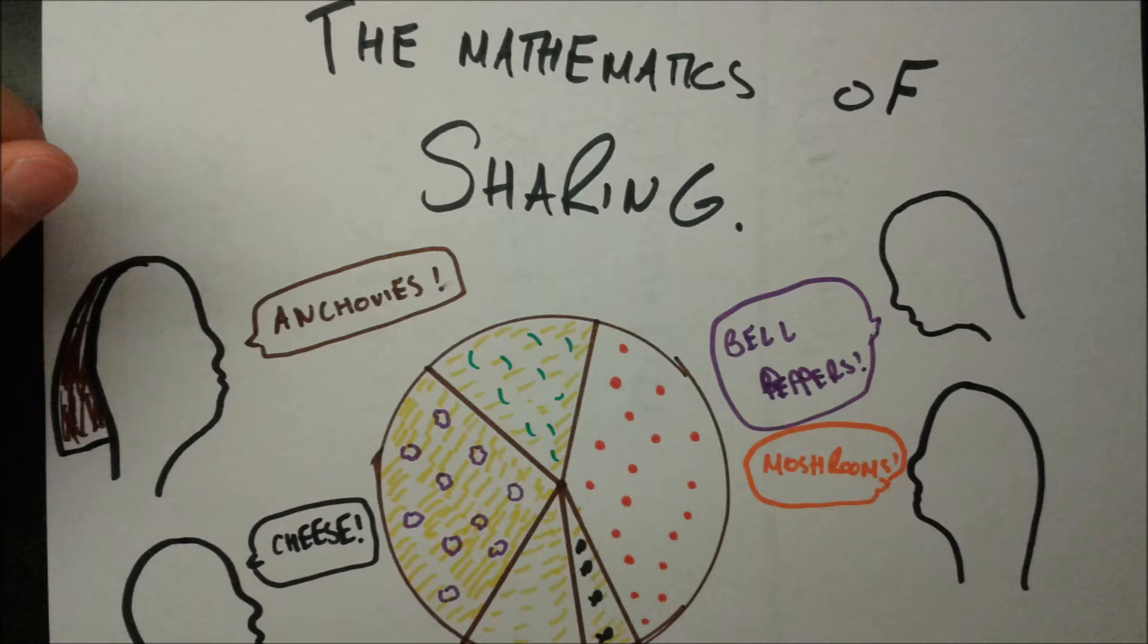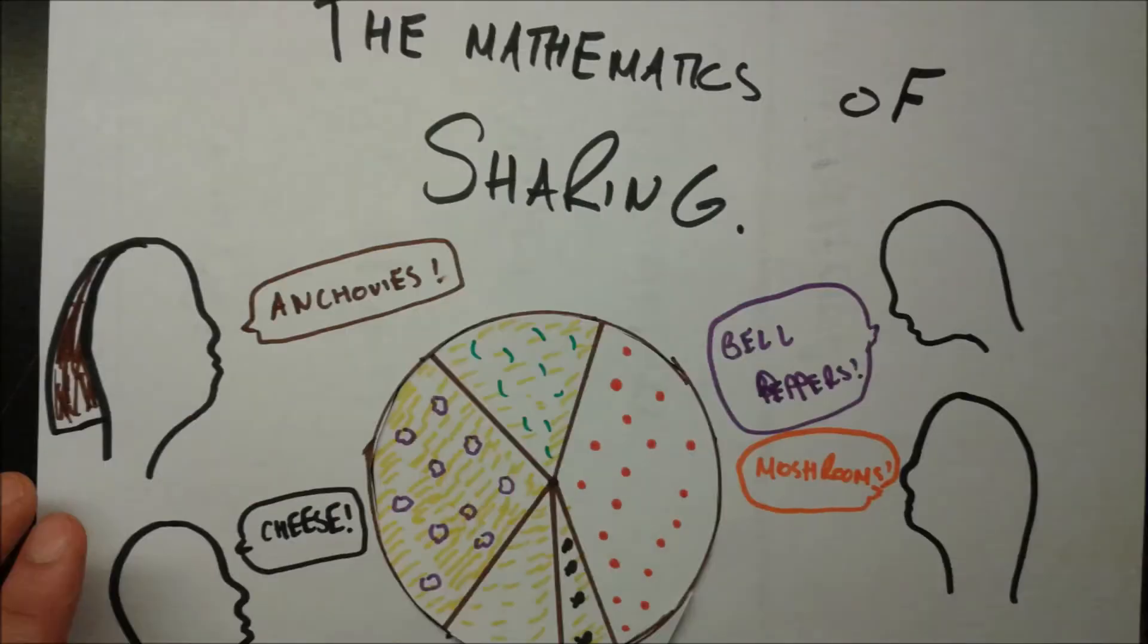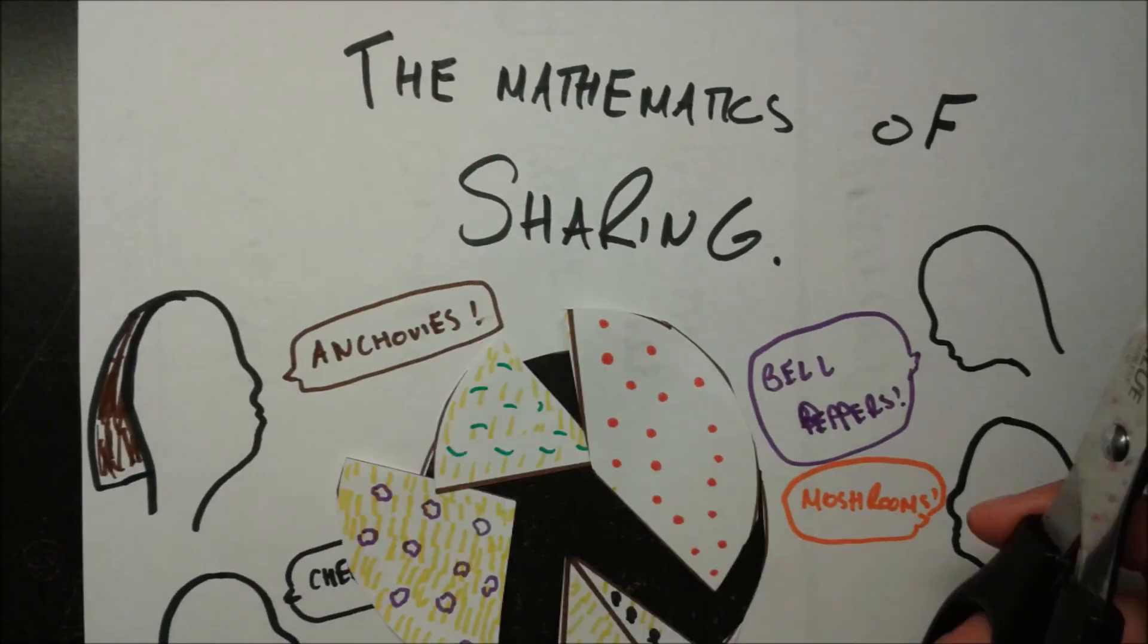So here's the situation. We have four people and a pizza, and we want to divide this pizza as evenly as possible amongst these four people. So we split it up into toppings and give each person the one they prefer.